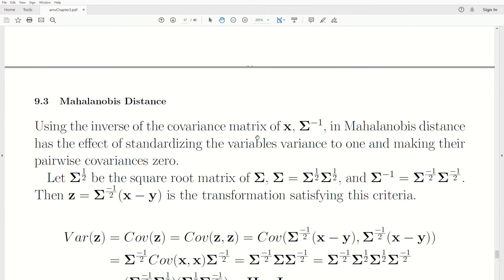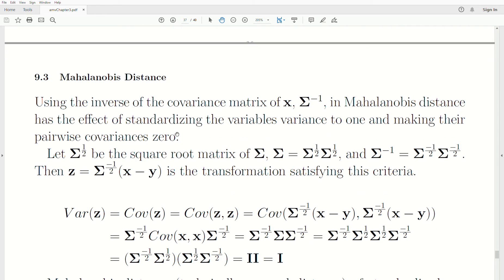Now, using the inverse of the covariance matrix of the vector X, which is Σ^(-1), Mahalanobis distance has the effect of standardizing the variables variance to one, and making the pairwise covariances equal to zero. And we'll illustrate that in a second. But first, I need to write down some notation. Let Σ^(1/2) be the square root matrix of Σ, which, in the previous video, you know that its square root matrix times itself is equal to the original Σ.